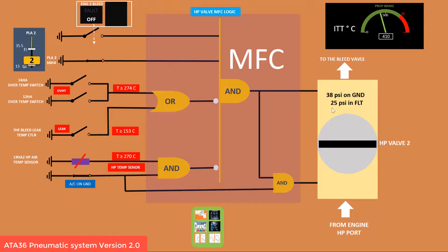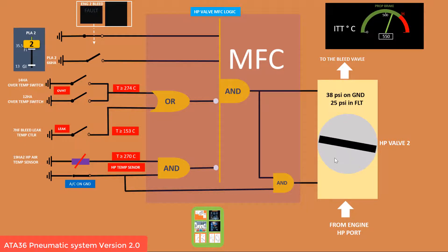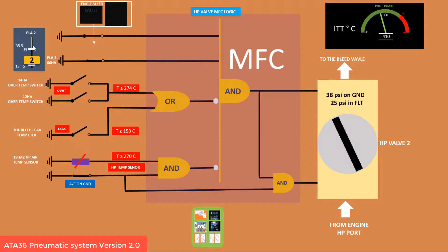This is the control button - a press button switch. Press: bar open. If you move the power level angle above the flight heading, 35.5 degrees, bar close. Move back to the ground heading, bar open.